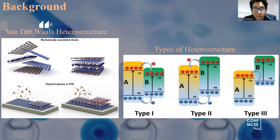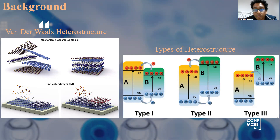Two-dimensional materials are atomically thin materials and they can be thinned down to the atomic level by several different methods. They can be synthesized either by Van der Waals mechanical exfoliation, or using chemical vapor deposition and physical vapor deposition. Due to their atomic configuration and layer structure, they can be stacked on top of one another to form many different kinds of heterostructures.